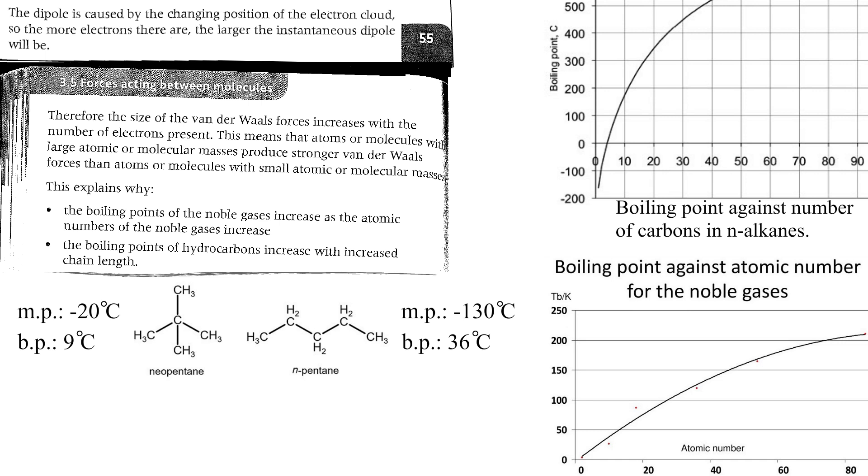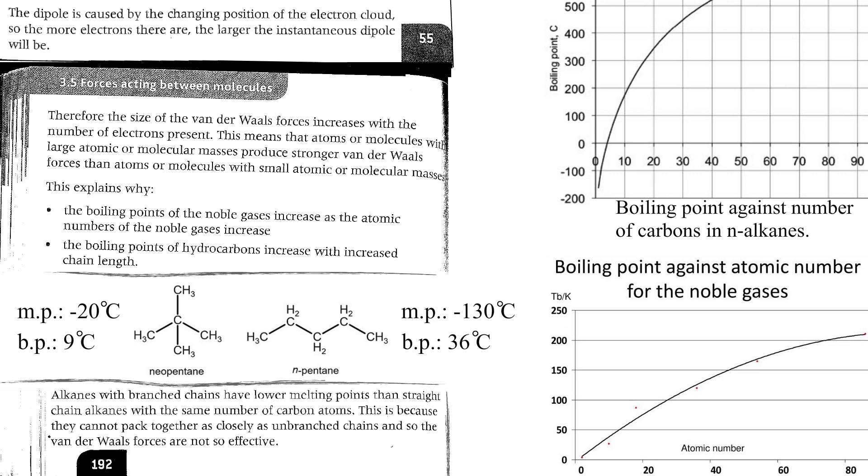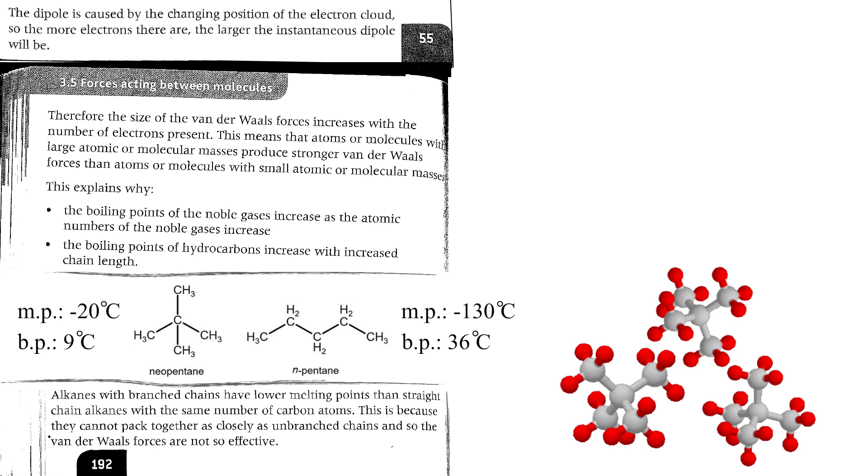Neopentane has lower boiling point than n-pentane, and they have the same number of electrons. In fact, neopentane is a gas at room temperature, whereas n-pentane is a volatile liquid. Your book says alkanes with branched chains have lower boiling points than straight-chain alkanes with the same number of carbon atoms, because they cannot pack together as closely as unbranched chains. And so the van der Waals forces are not so effective. That should give you marks.